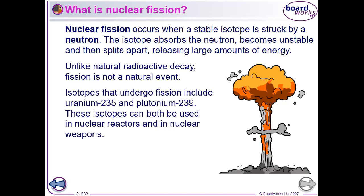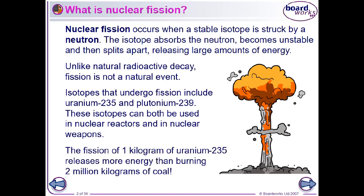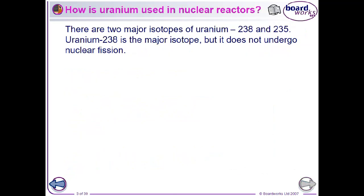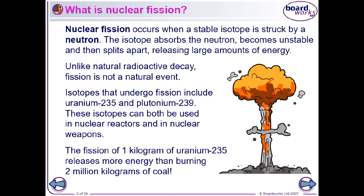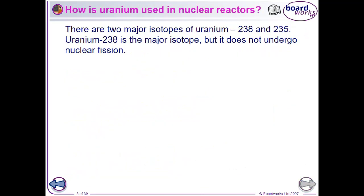Isotopes that will undergo fission include uranium-235 and plutonium-239. We can use both of these either in a controlled way in a nuclear reactor or an uncontrolled way in nuclear weapons. The fission of one kilo of uranium-235 releases more energy than burning two million kilos of coal. So for climate change, nuclear power is a lot better.